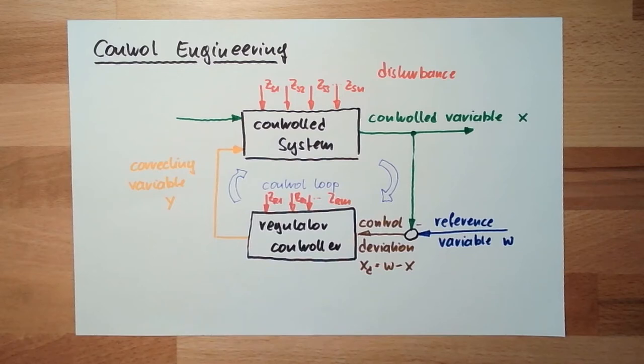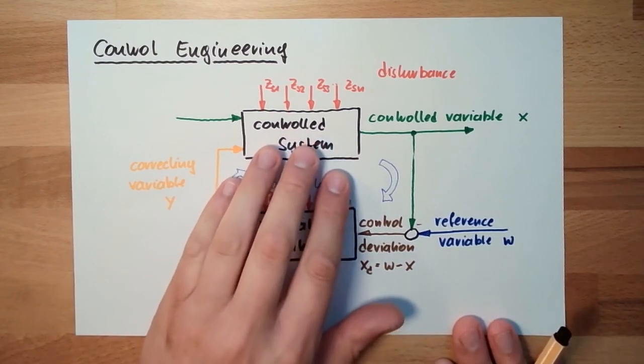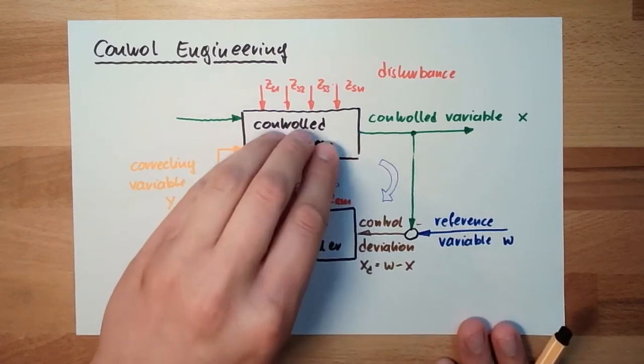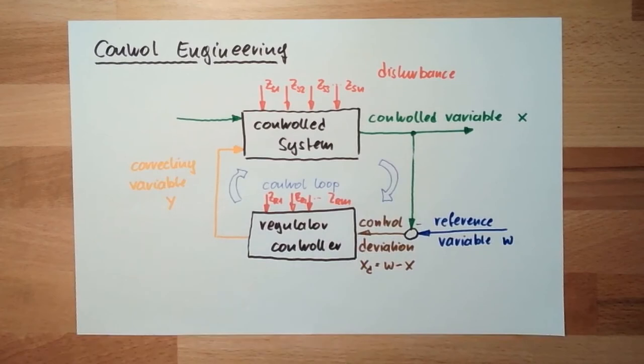Energy storage might be a mass, might be some spring or whatever. Whatever can store an amount of energy, heat, tension, whatever. The control system might be mathematically described in form of a differential equation. Then I can solve it somehow with mathematics. We will talk about this later.